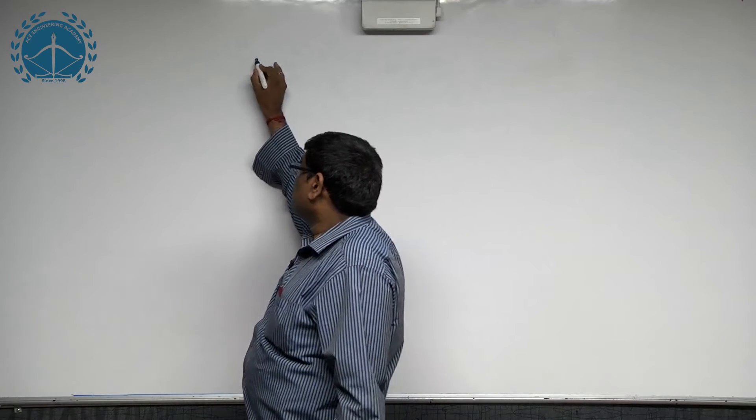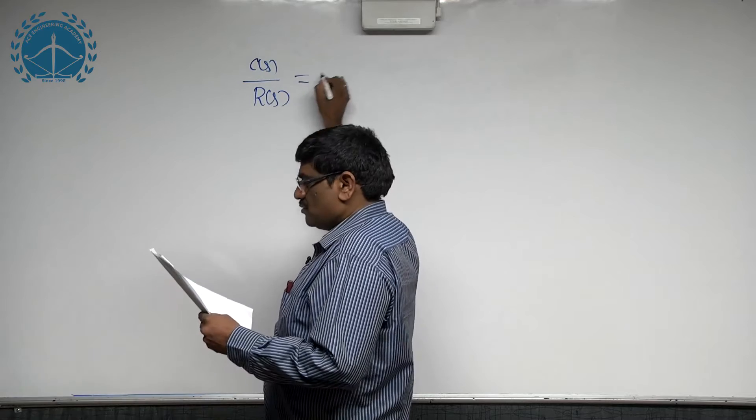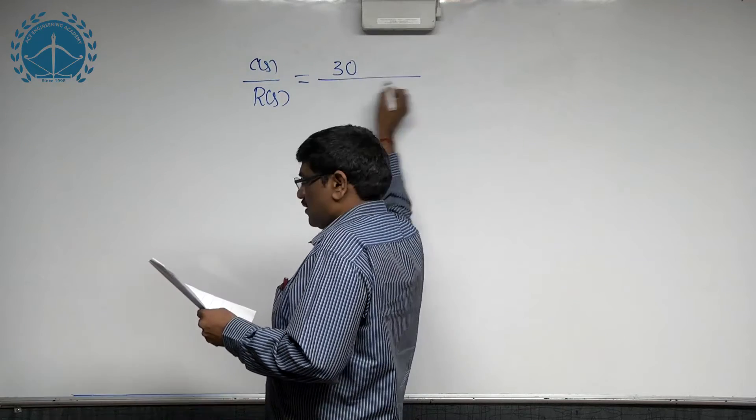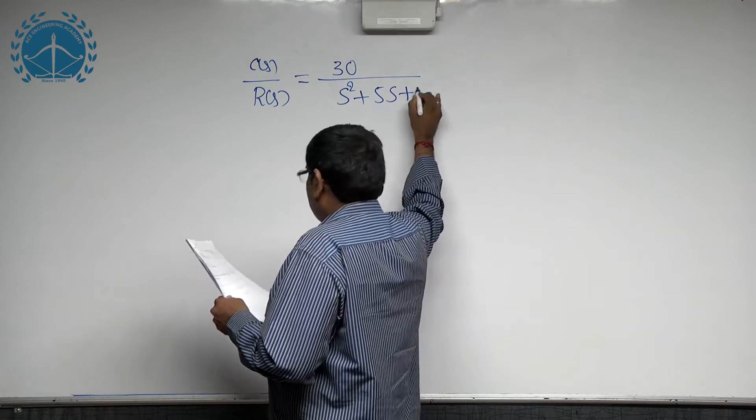Closed loop transfer function, that is C(s)/R(s), equals 30 divided by s squared plus 5s plus 36 given.